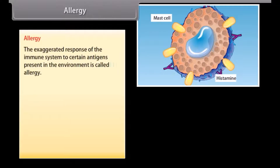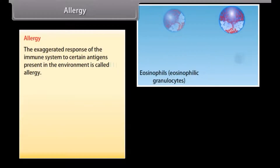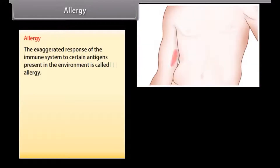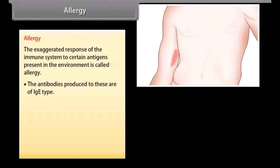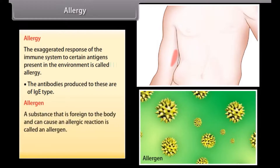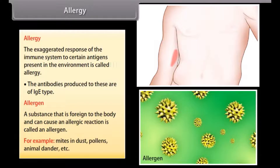The exaggerated response of the immune system to certain antigens present in the environment is called allergy. The antibodies produced in response to these are of the IgE type. A substance that is foreign to the body and can cause an allergic reaction is called an allergen. For example, mites in dust, pollens, animal dander, etc.